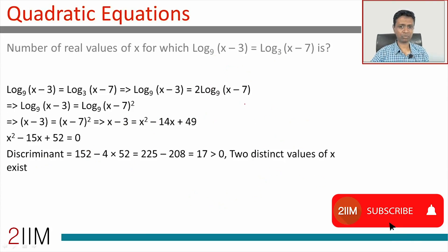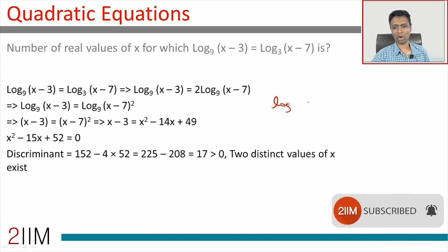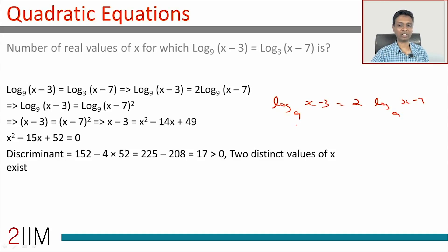This gives us log (x - 3) to the base 9 equals 2 times log (x - 7) to the base 9. The first simplification brings it to the same base of 9 or 7, doesn't really matter.